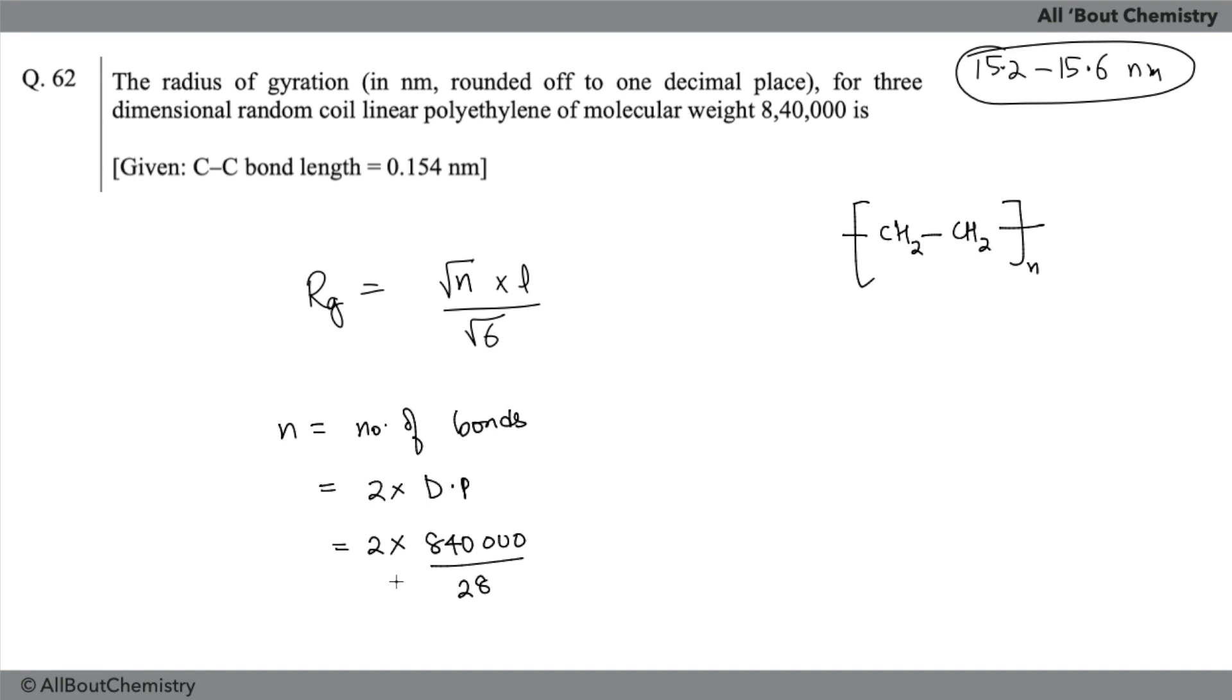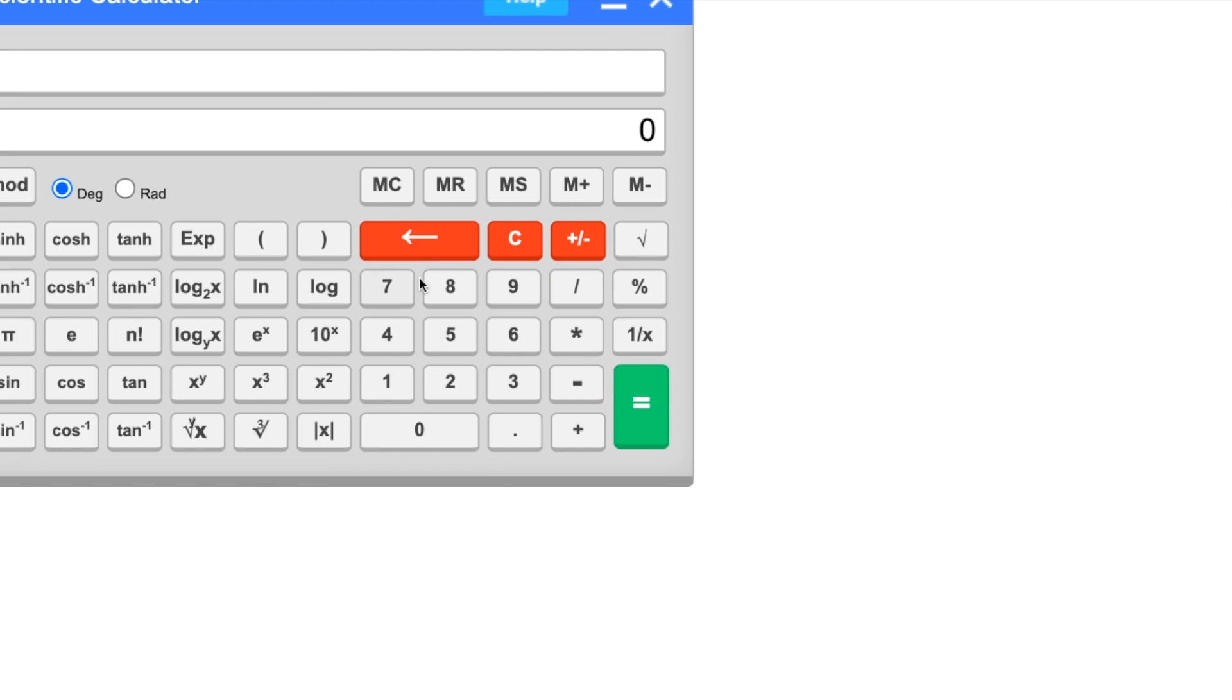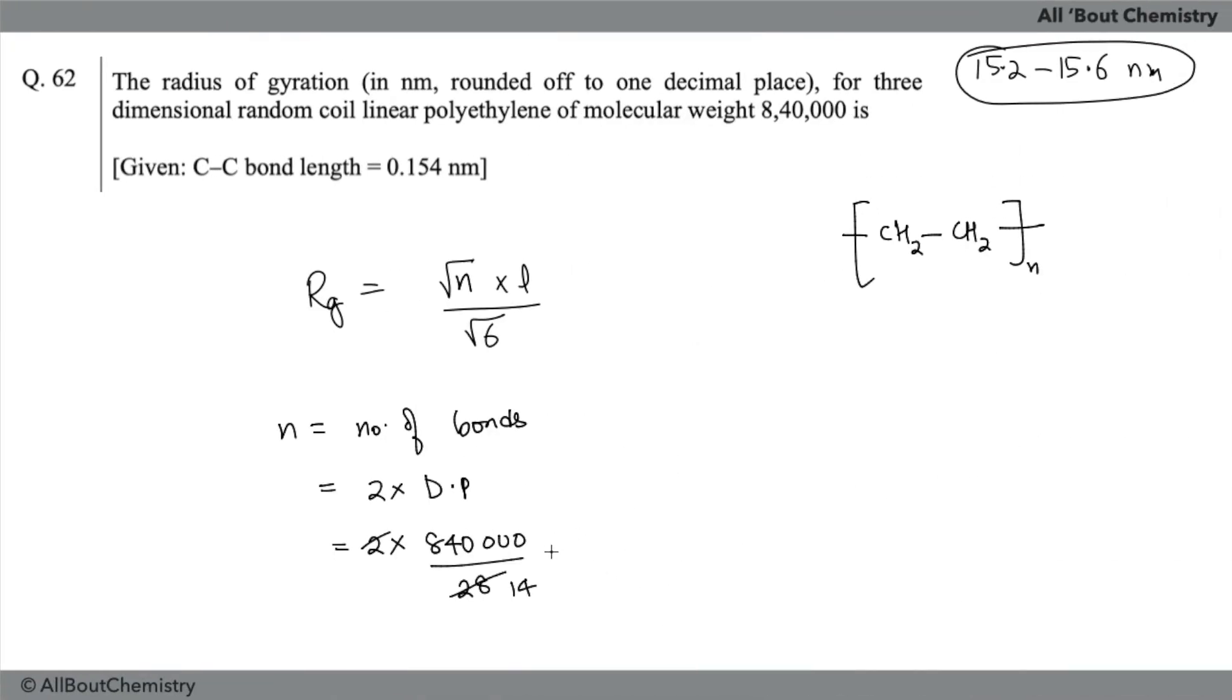Total mass is 84,000 divided by mass of a single monomer, which is going to be 28. That's what it should be. If you divide this, you are going to get, let us use the calculator. This will be 14 times, and if you divide 84 by 14, it gives 6. So it should be 6 and 4, 0, so 60,000. That's what I will get as the value of n.